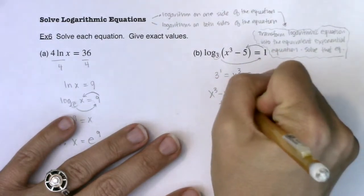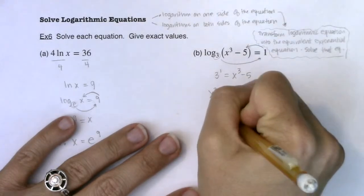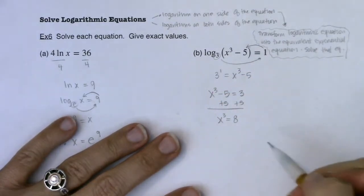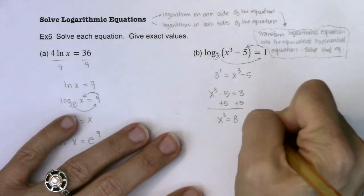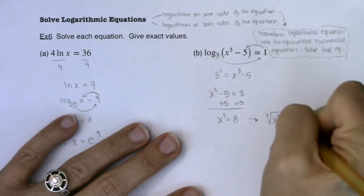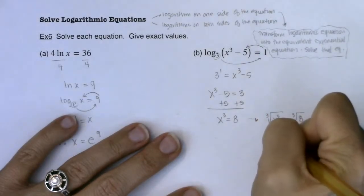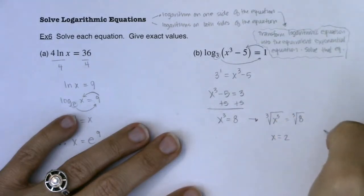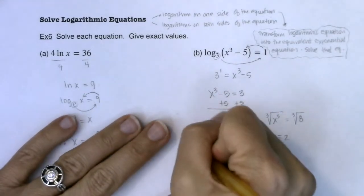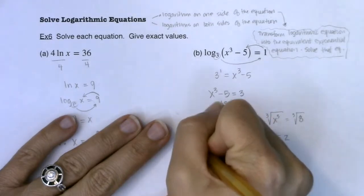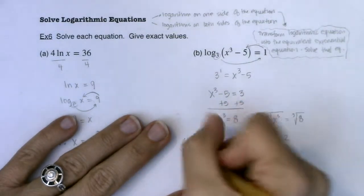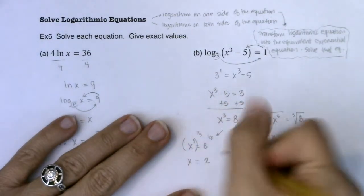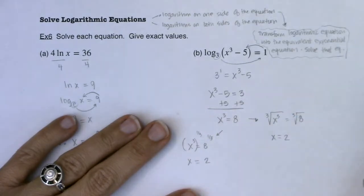At this point I don't have a logarithmic equation anymore — I have a cubic equation. Writing the variable on the left: x cubed minus 5 equals 3. Adding 5 to both sides gives x cubed equals 8. Taking the cube root of both sides, or raising both sides to the one-third power, gives x equals 2, since 8 to the one-third is 2.